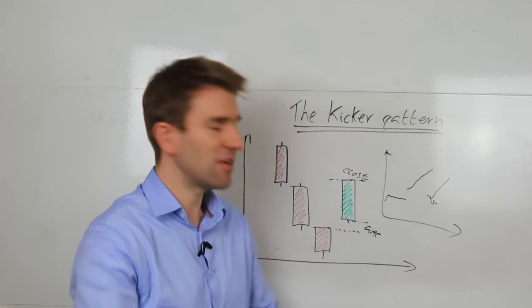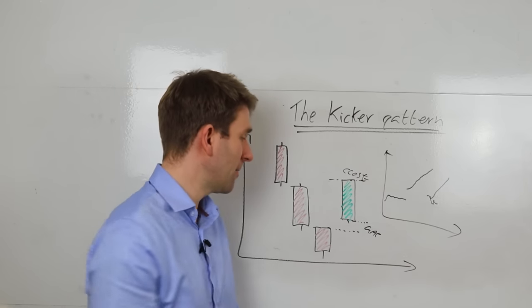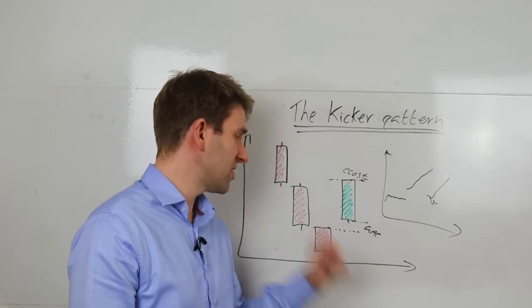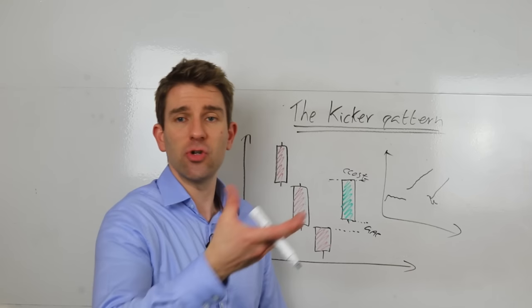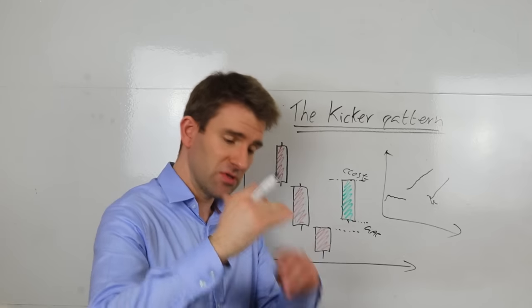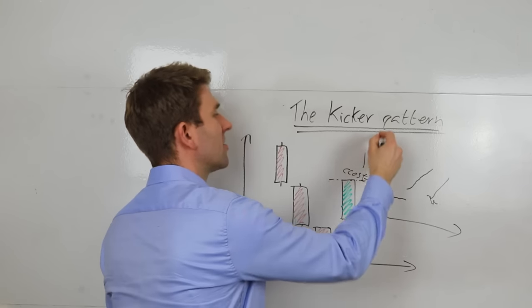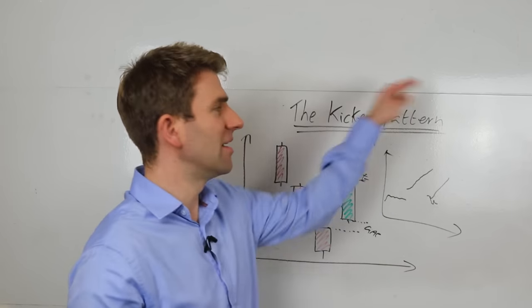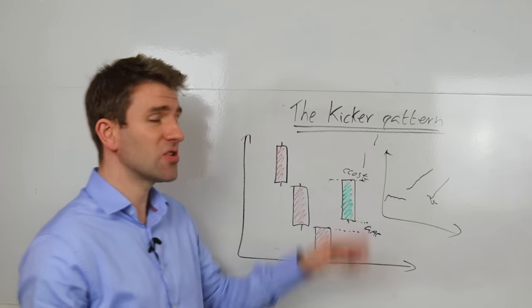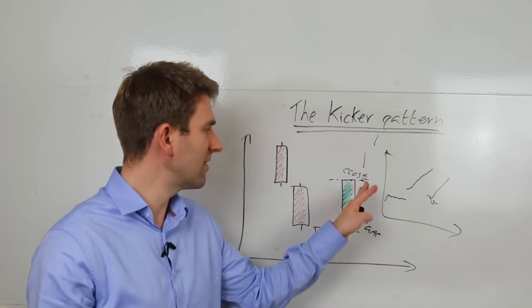By the way, it's called a kicker pattern because, I believe, it's like a football. Imagine a football sitting there and someone kicks it. You get that initial jump off the ground and then it's going to continue on and go higher and higher until it falls down again. The only trick you've got then is to try and time your exit if you're day trading.